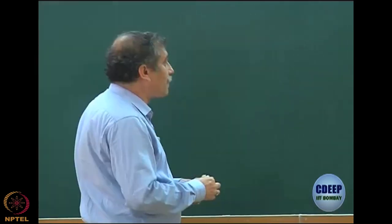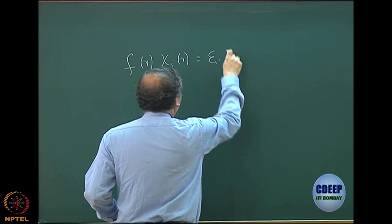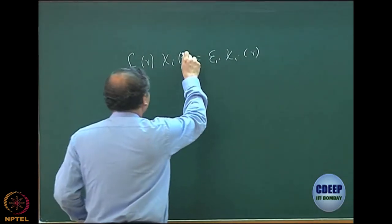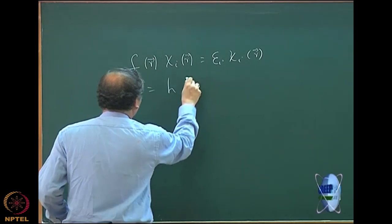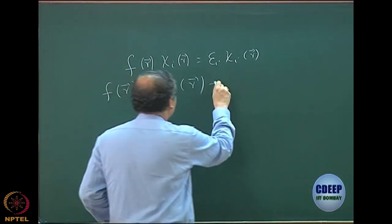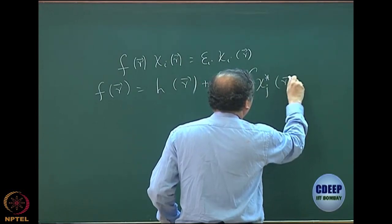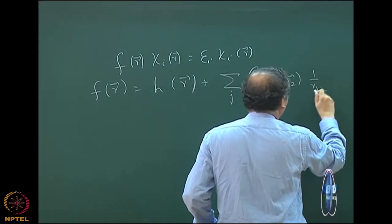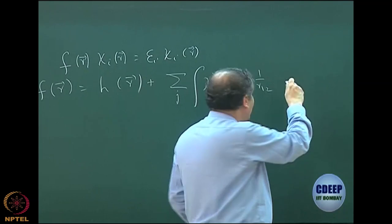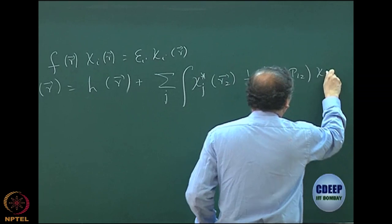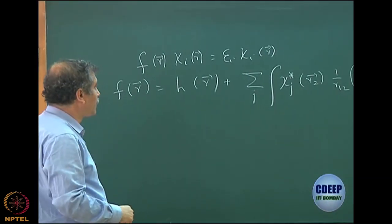Going back from the beginning: you had the canonical Hartree-Fock equation which gives the spin orbitals. You had the expression for f of r, which is the one-electron part, plus sum over j of chi_j*(r2) times (1/r12) times (1 minus P12) times chi_j(r2) d-tau. That was our first expression.